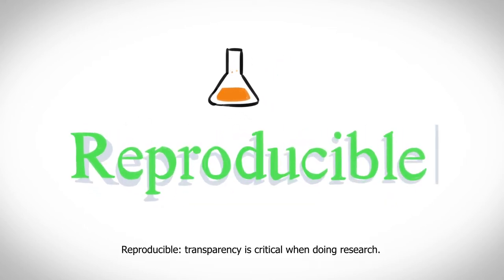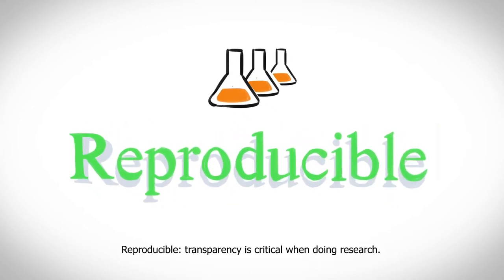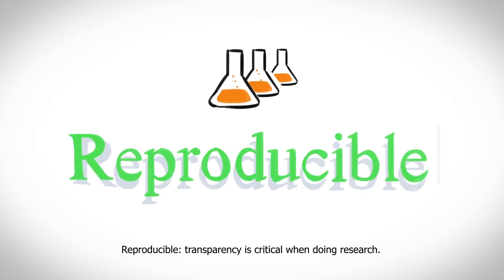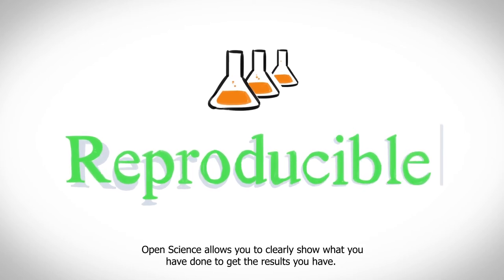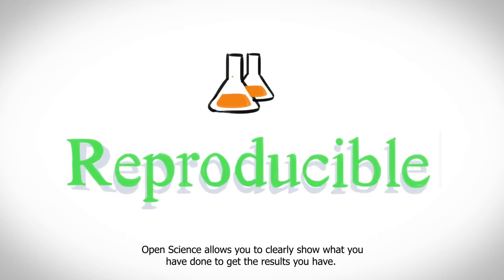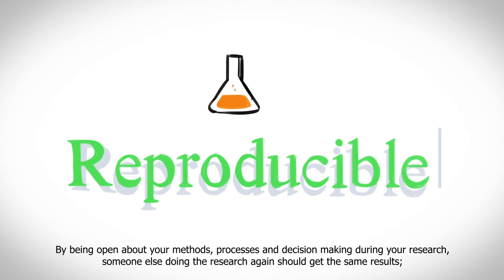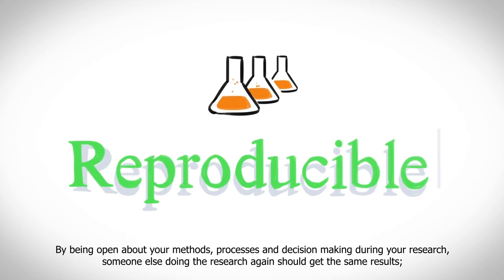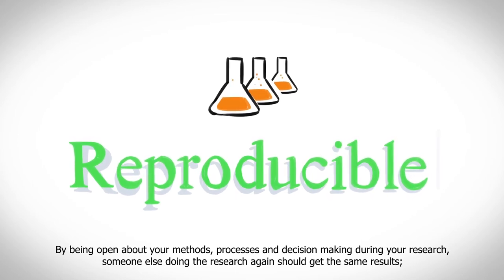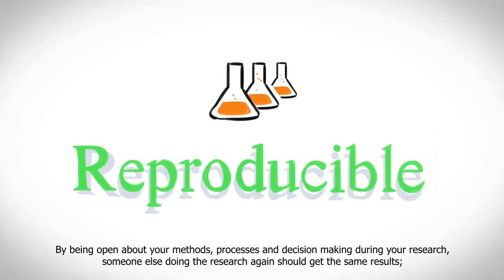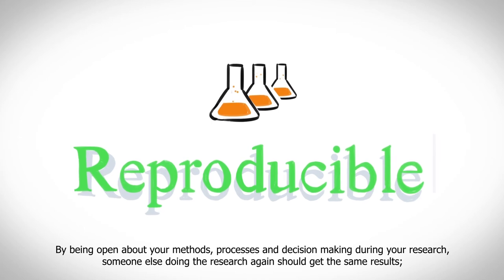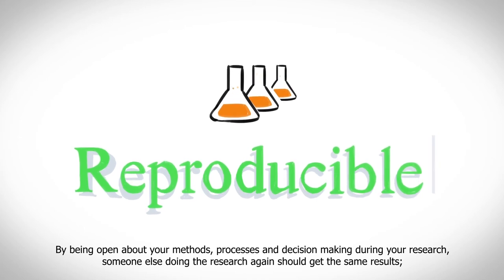Reproducible. Transparency is critical when doing research. Open science allows you to clearly show what you've done to get your results. By being open about your methods, processes, and decision-making, someone else doing the research again should get the same results.